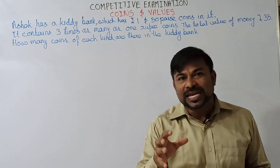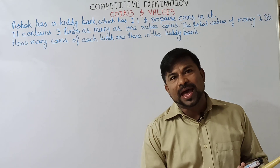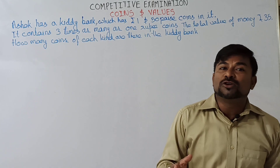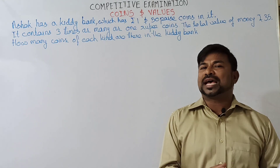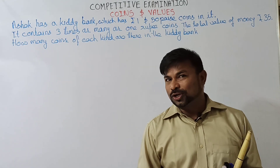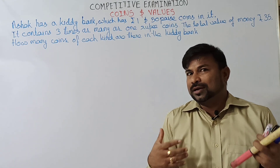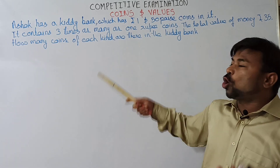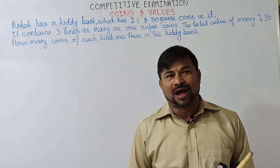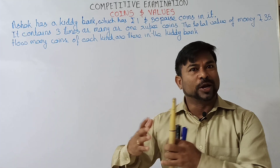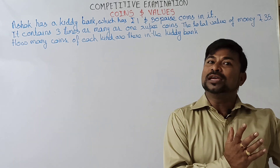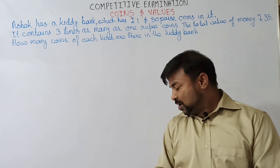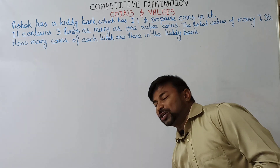The total value of the money he has in the kiddie bank is nothing but 35 rupees. The question is: how many coins are there of each kind? How many 1 rupee coins are there and how many 50 paise coins are there?